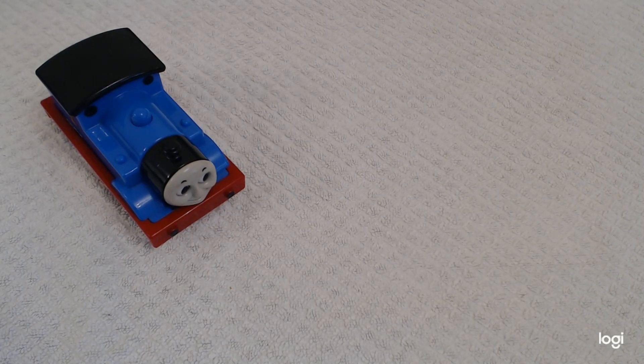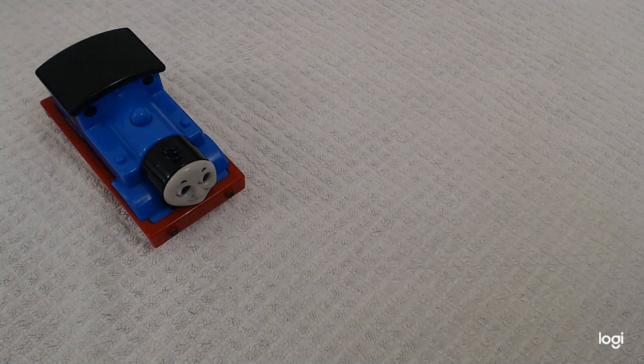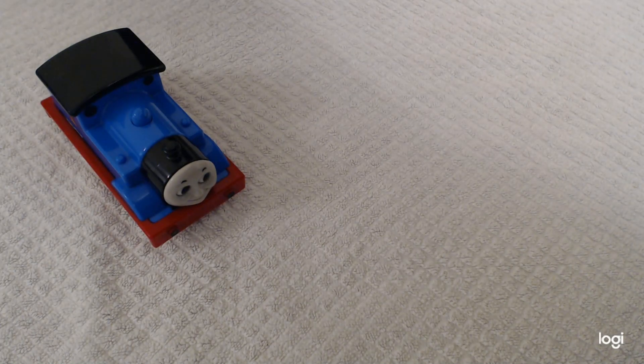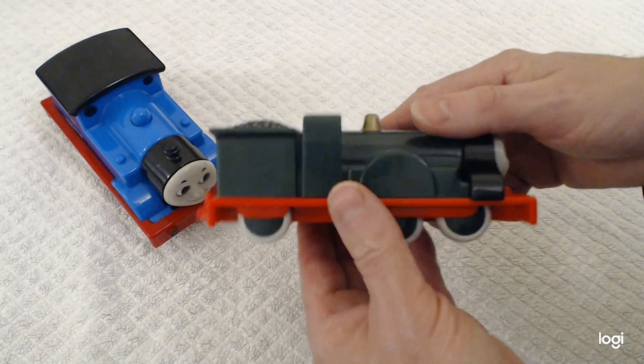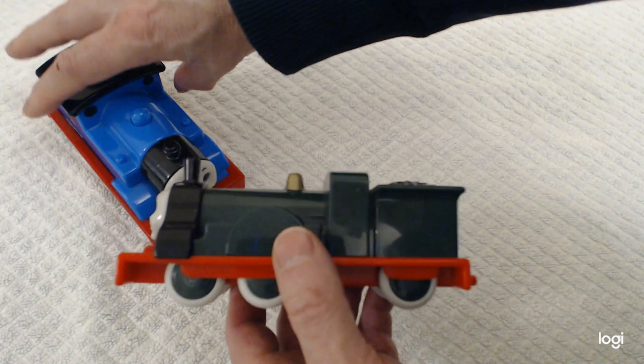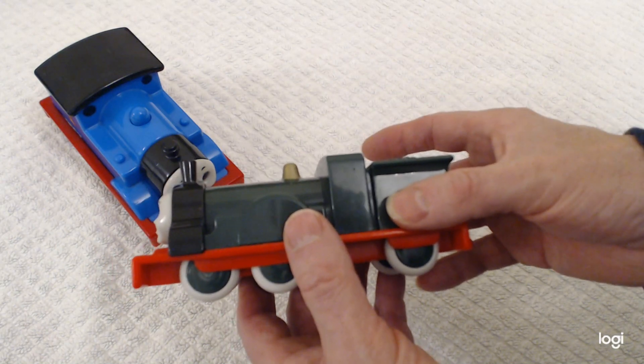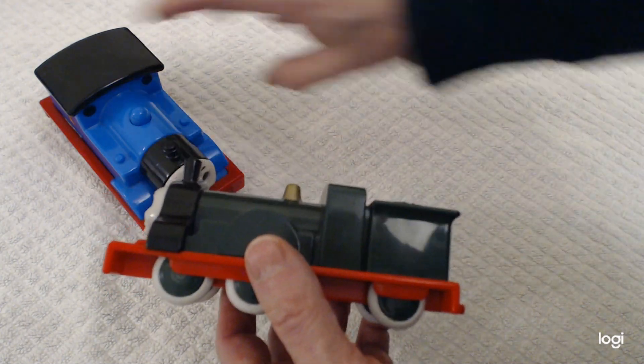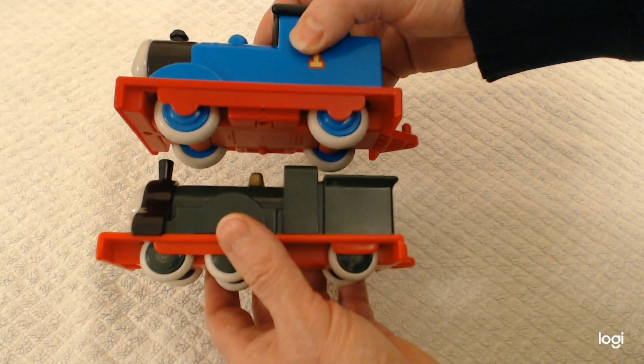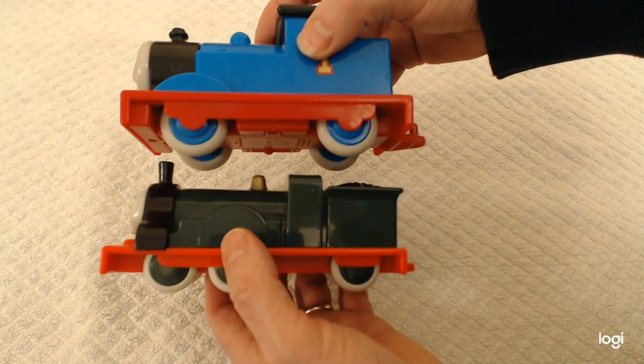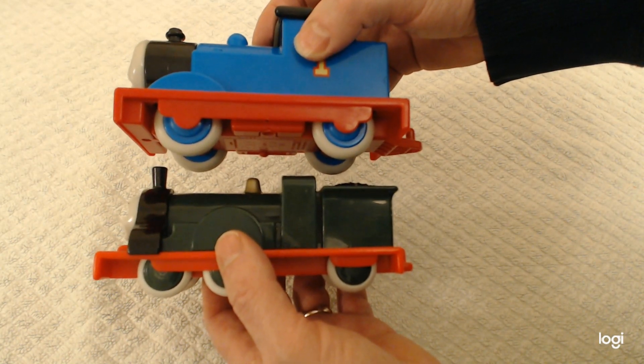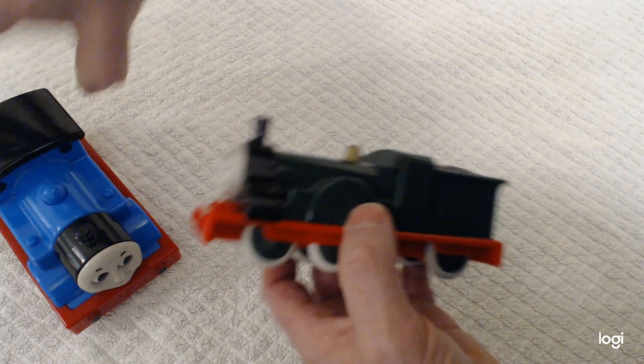The purpose of today's video is to introduce you to another very special engine. Now they made her, that's Emily. They made her in a non-talking version. Because she's an engine that has a tender, she's particularly large. That's a non-talking version of Emily and she's about the same size as a talking version Thomas.